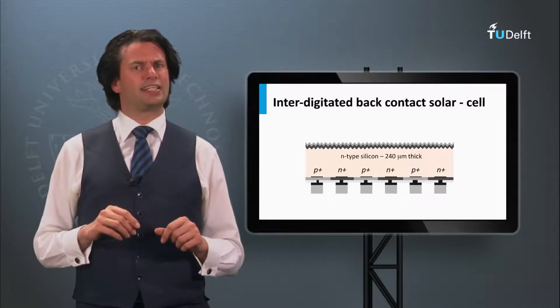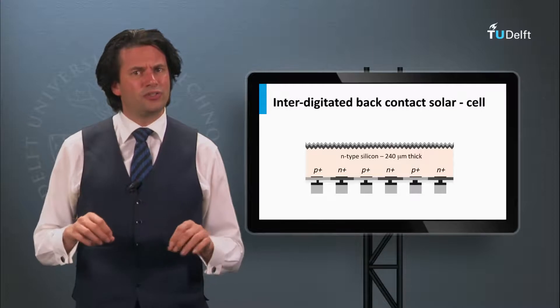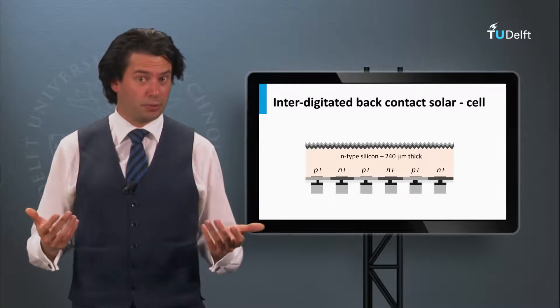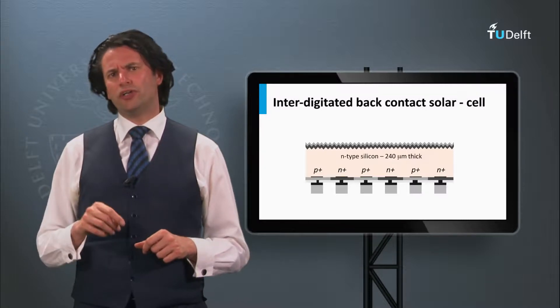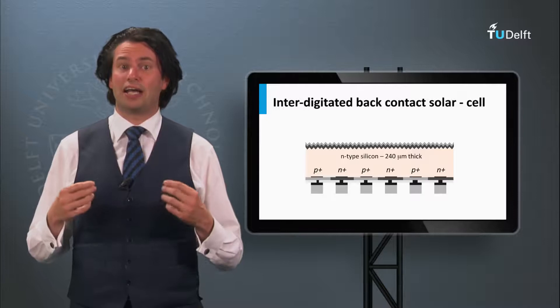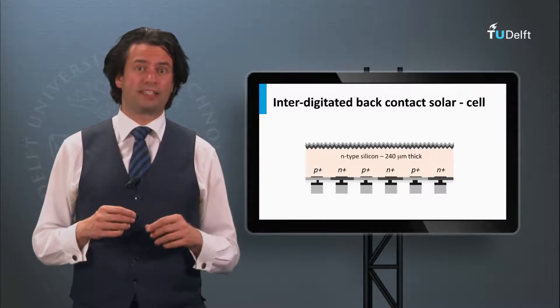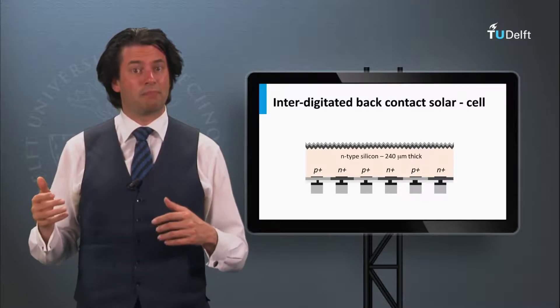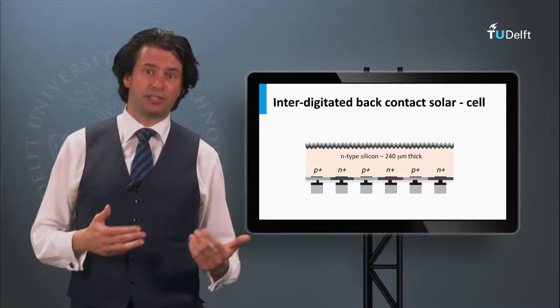The second advantage is that N-type silicon is not that sensitive for impurities like for instance iron impurities. As a result, less efforts have to be made to make a high electronic quality of N-type silicon, meaning that high quality N-type silicon can be processed cheaper than P-type.